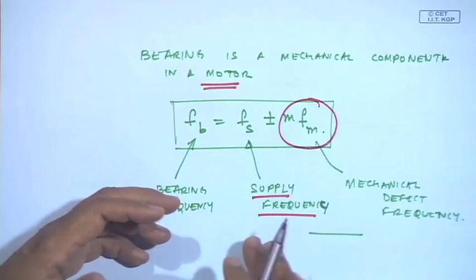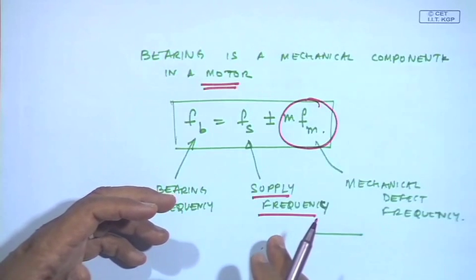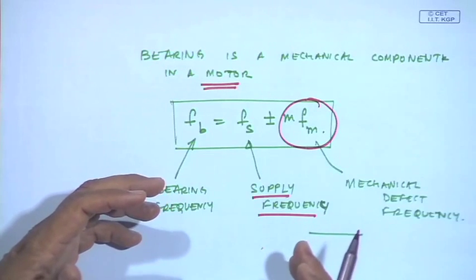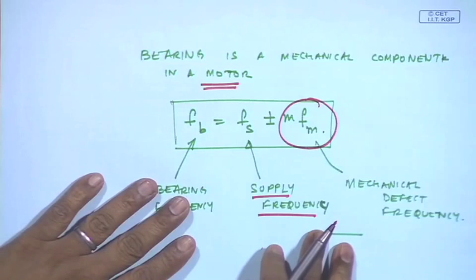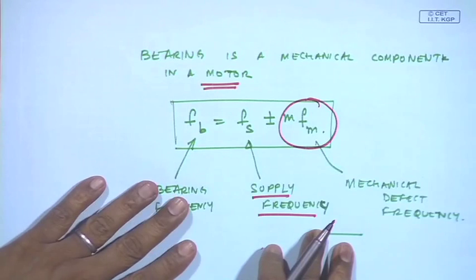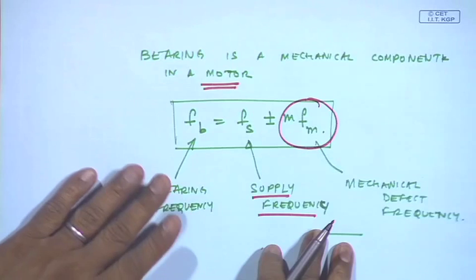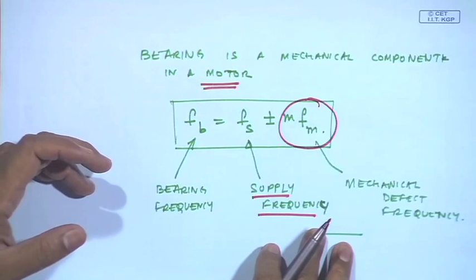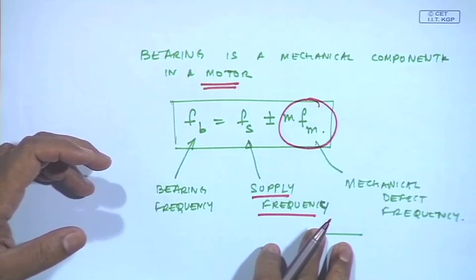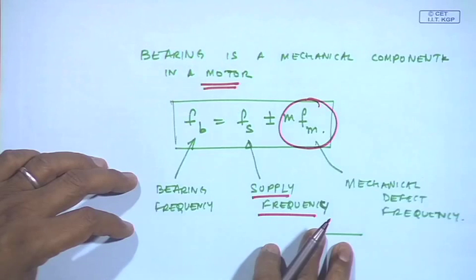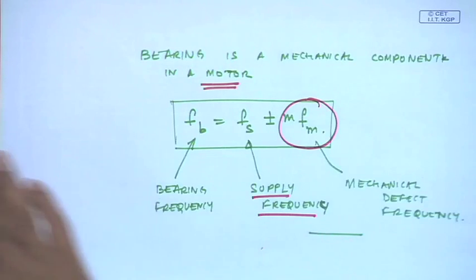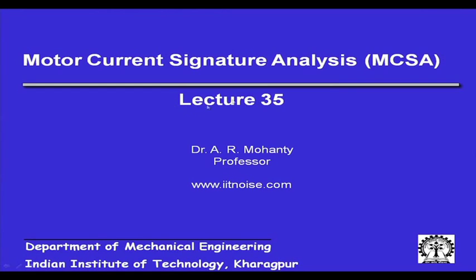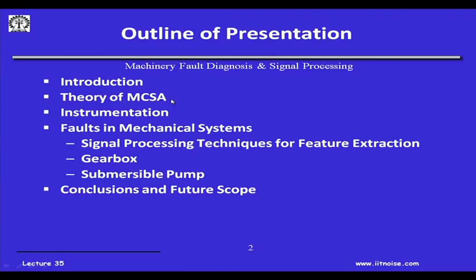We will see the genesis of how this happens in an electrical motor and you will see how powerful this technique is, for the fact that it is non-intrusive. I need not go near the mechanical unit. Remotely, at my control room, just by accessing the conductors carrying the current of the electrical motor, I can find out the faults. In this lecture on motor current signature analysis, I will basically tell you about the theory of MCSA.